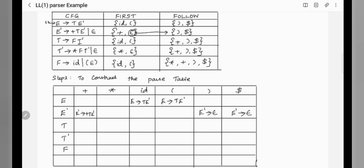For T, FIRST(T) is id and open brackets, so T tends to F T dash goes in those columns. For T dash, FIRST(T dash) contains star, so T dash tends to star F T dash goes in the star column. Since epsilon is in FIRST(T dash), we look at FOLLOW(T dash), which is plus, close brackets, and dollar. So T dash tends to epsilon goes in those columns.